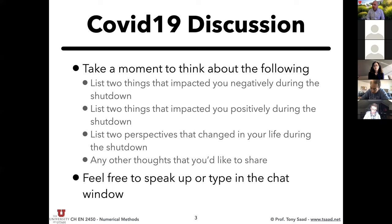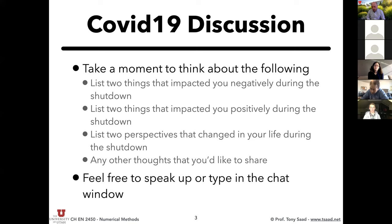I also want you to think about two things that impacted you positively. For example, I built a fire pit in my backyard and my son loves that — we go roast marshmallows and then there's a lot of smoke so we have to rush and put sand on top of it. I also want you to list one or two perspectives that changed in your life — about the world, family — because of the shutdown, and any other thoughts you'd like to share. I'll give you a minute.